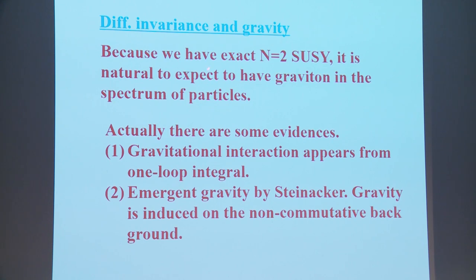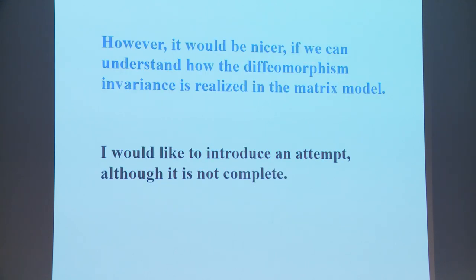I would like to discuss diffeomorphism invariance and gravity. Because we have exact N=2 supersymmetry, it is natural to expect a graviton in the spectrum. There are some evidences: first, gravitational interaction appears from one-loop integral; and second, emergent gravity by Steinacker — gravity is induced on the non-commutative background. However, it would be nicer to understand how diffeomorphism invariance is realized in the matrix model. I would like to introduce an attempt, although it is not complete.